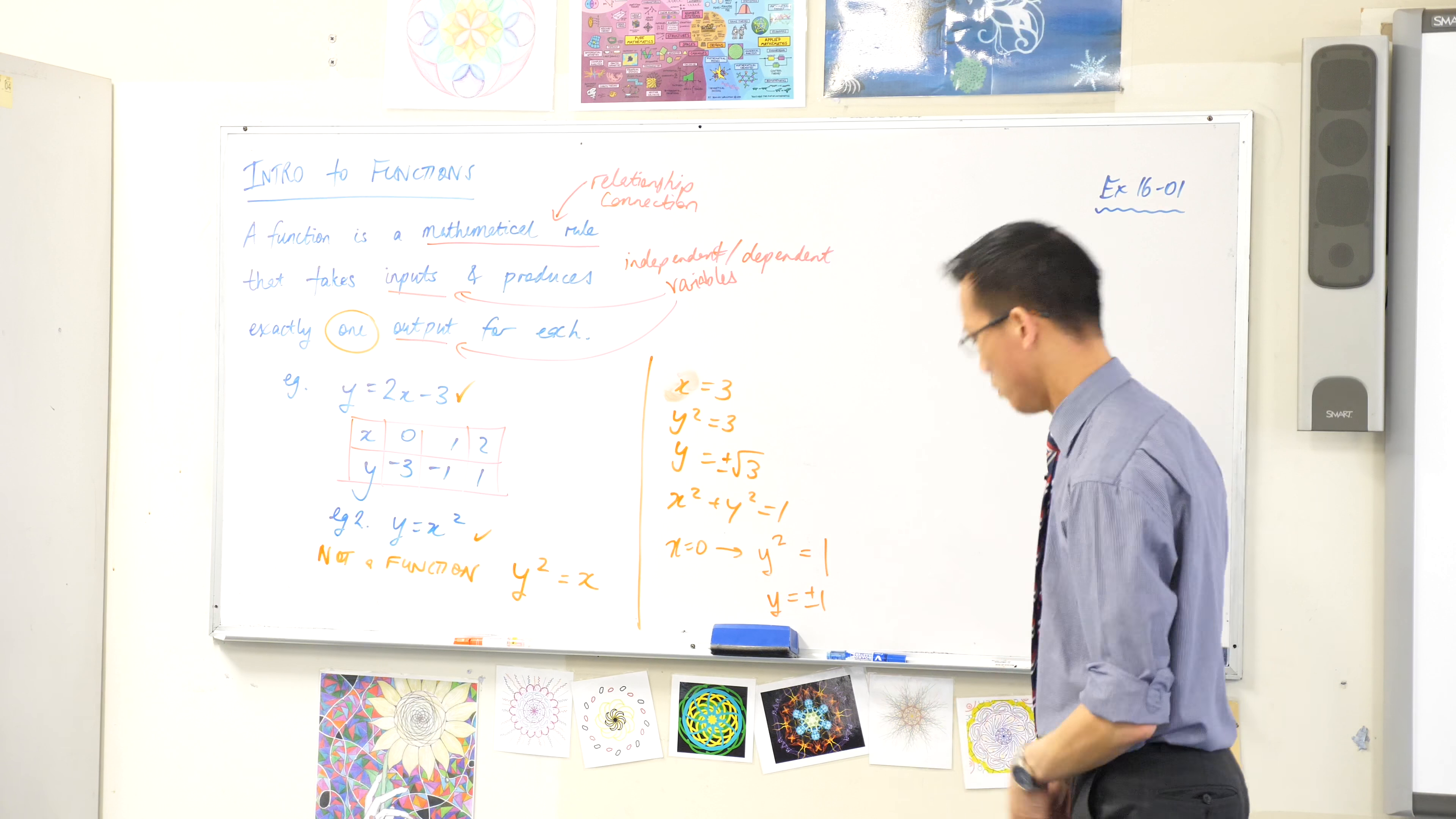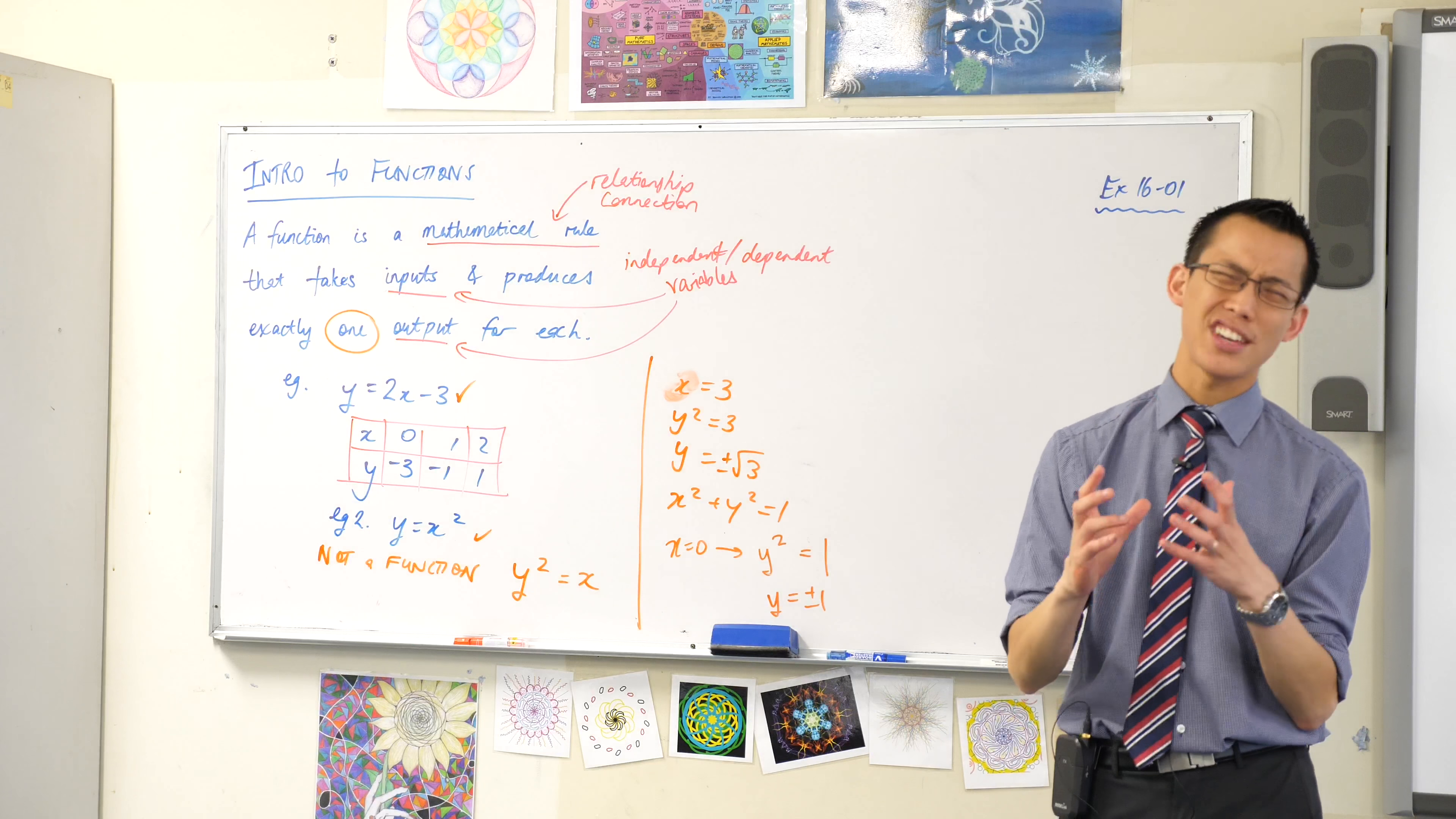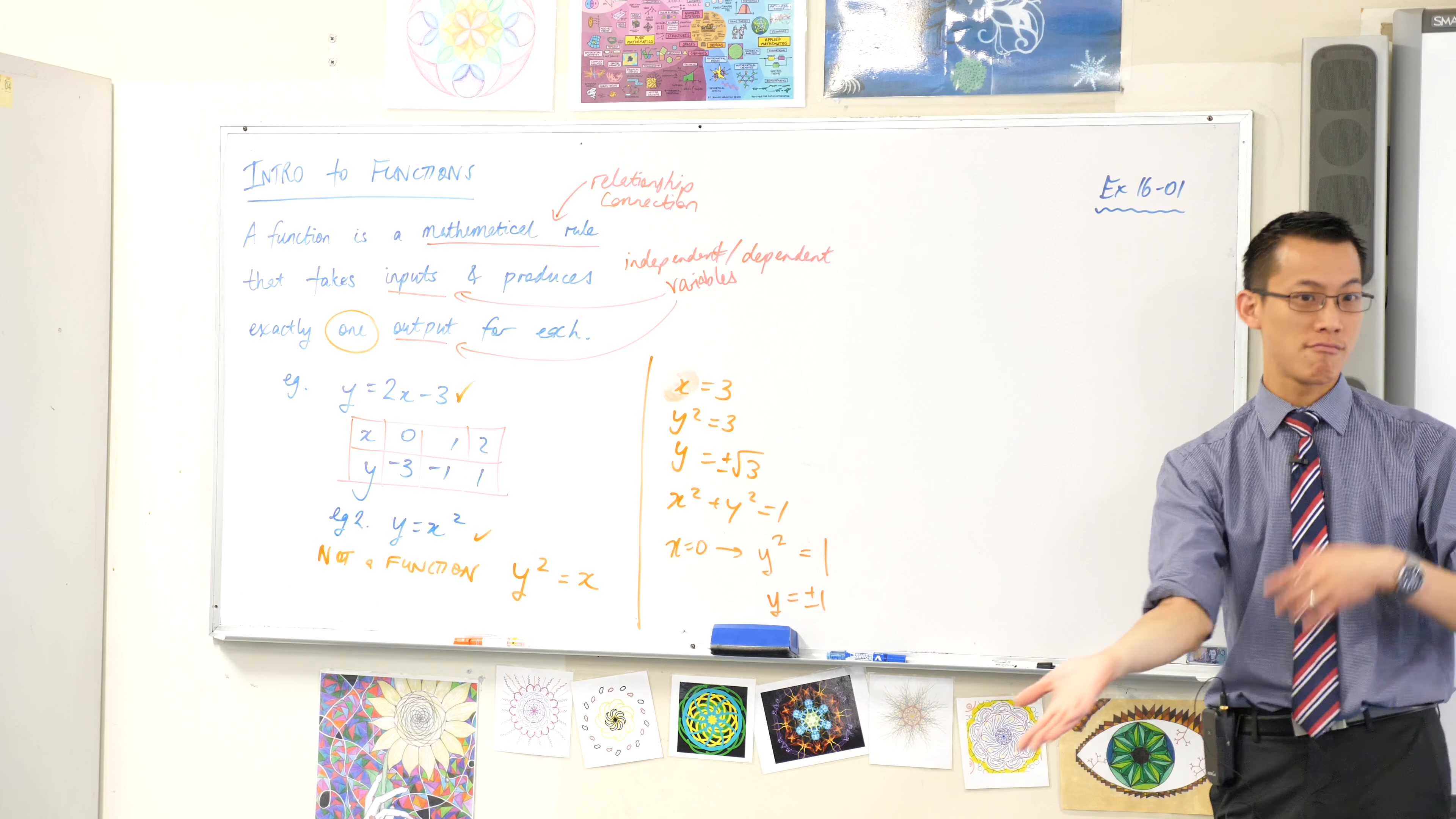So I would like you to draw one set of axes for each of these and we're going to draw a picture and find a much easier way, rather than all this fancy language, a really simple visual way to work out is something a function or is it not?